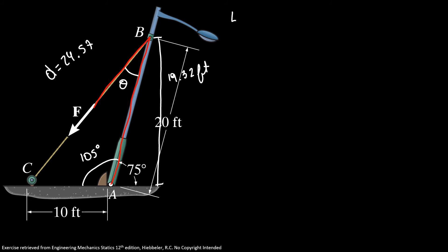So, applying law of sines, I have d over sine of 105 has to be equal 10 over sine of theta. So, I know my sine of theta is equal 10 times sine of 105 degrees over 24.57. So, sine of theta is equal 0.393.